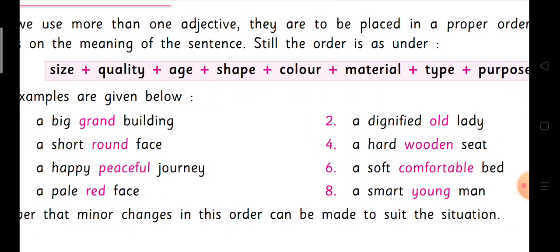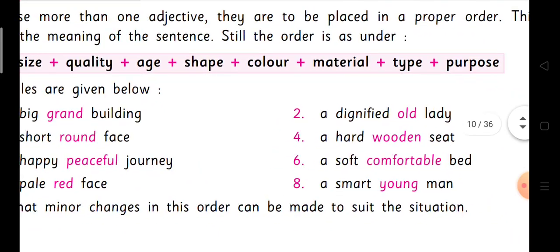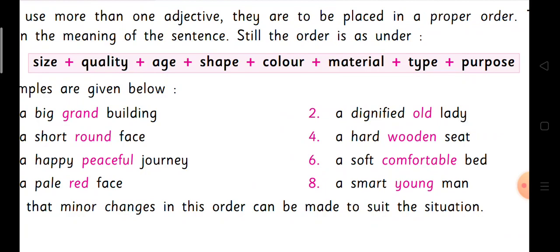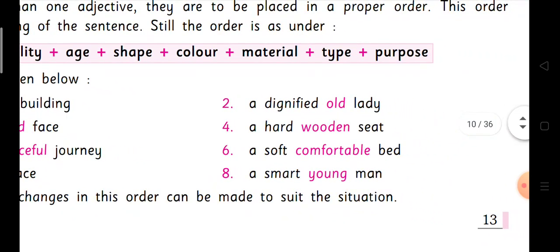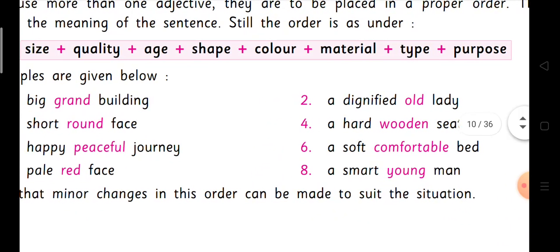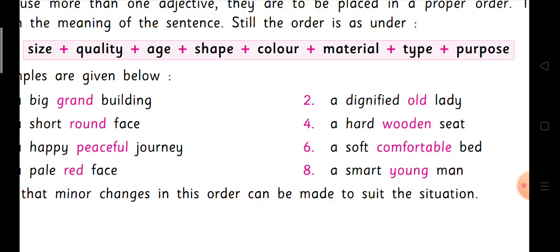Third: 'A happy peaceful journey.' Happy is quality, and peaceful is the type — so quality before type. Next: 'A pale red face.' Pale is quality and red is color — color is used after quality. Then: 'A dignified old lady.' Dignified is quality, old tells about age — so quality first, then age.